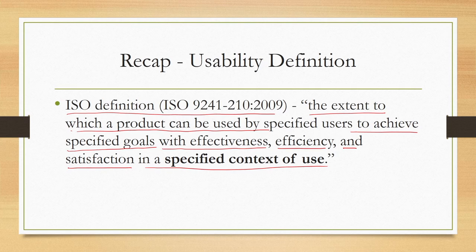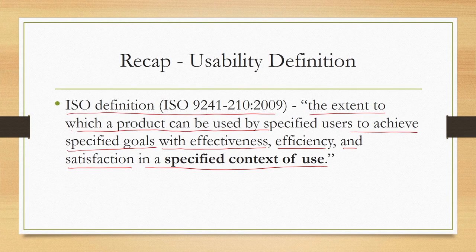There is a definition of usability we would like to recall before going further into the discussion on contextual inquiry. That is the ISO definition: usability is the extent to which a product can be used by specified users to achieve specified goals with effectiveness, efficiency, and satisfaction in a specified context of use. This definition categorically talks about a specific group of users who wish to achieve specific goals in a specified context of use. We have to somehow capture the use context before we can think of building a usable product — who are the users, what are their goals, and what will be the context of use.